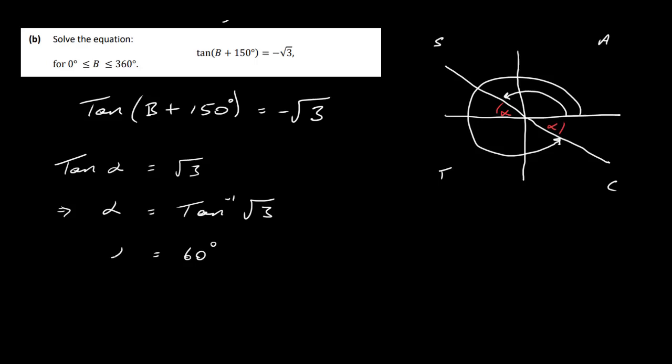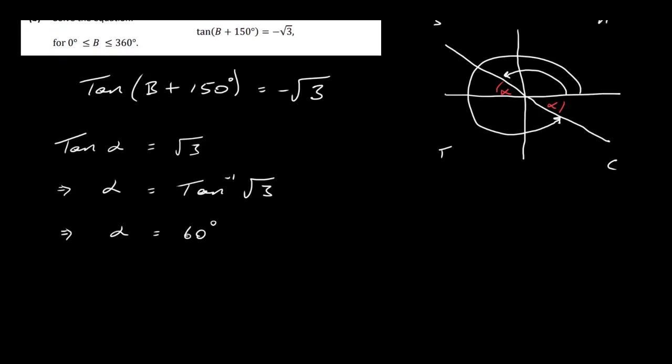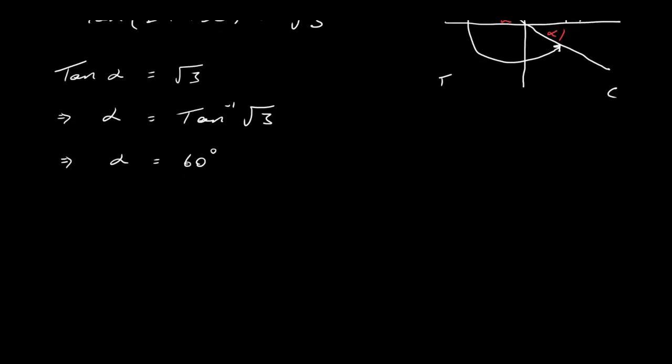So our alpha is 60 degrees, that means our two angles are 180 minus 60, which is 120, and 360 minus 60, which is 300. So that would mean then down here I can write that B plus 150 is equal to 120 degrees, and B plus 150 can also be equal to 300 degrees.